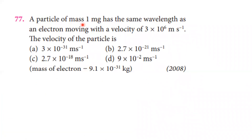A particle of mass 1 milligram has the same wavelength as an electron moving with a velocity of 3 times 10 to the power 6 meters per second. We need to find the velocity of the particle.